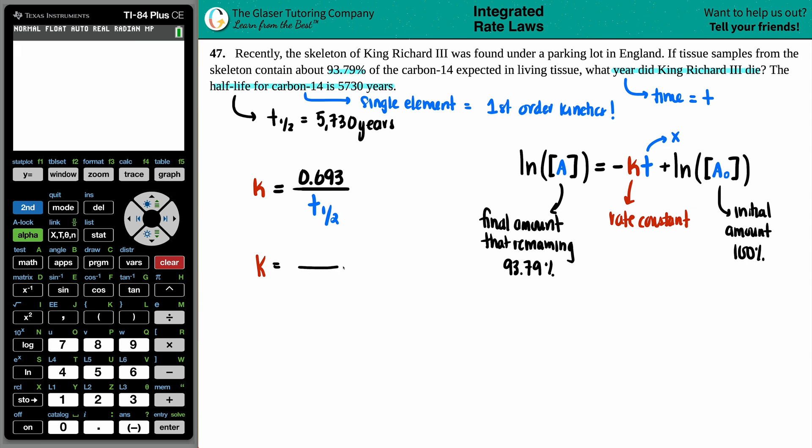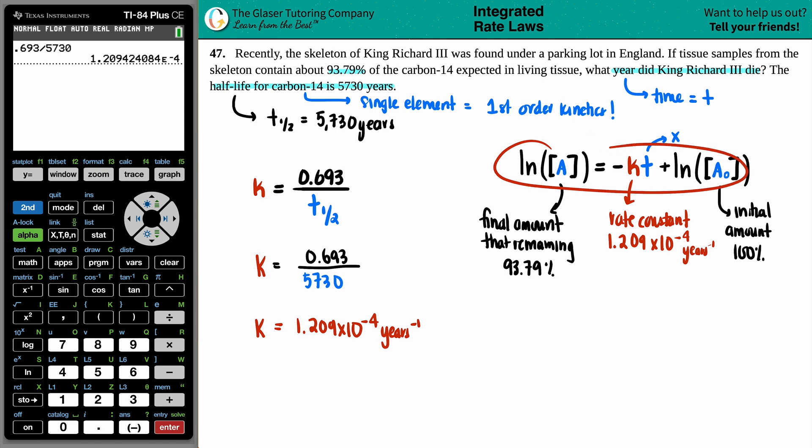k equals 0.693 divided by 5,730. Okay. 0.693 divided by 5,730. And sure, we'll do 1.209 times 10 to the negative fourth. And the units for first order for k values is always going to be what the time is to the minus one. So in this case, since the half-life was in years, this would be years to the minus one. And that's what this number is going to be now. We now know that the rate constant is going to be 1.209 times 10 to the negative fourth years to the minus one.